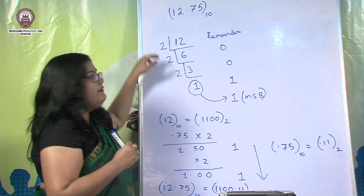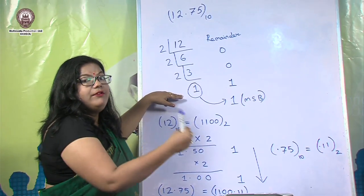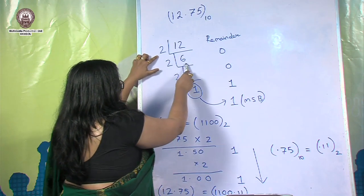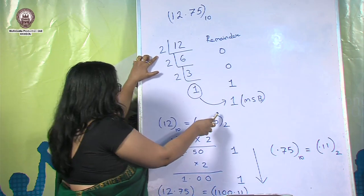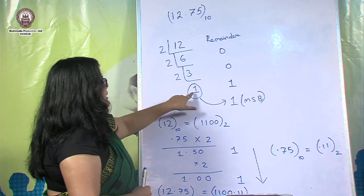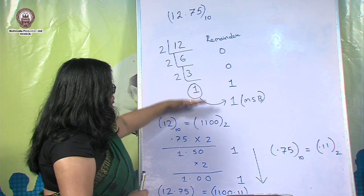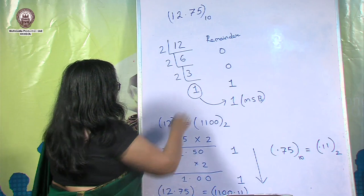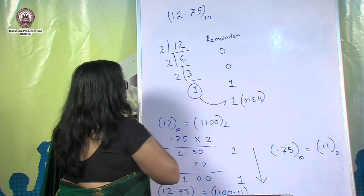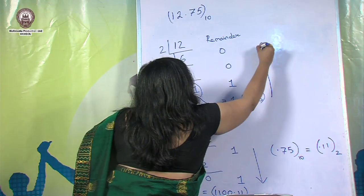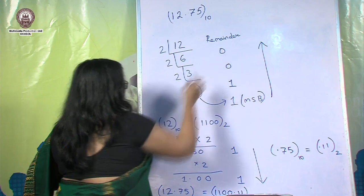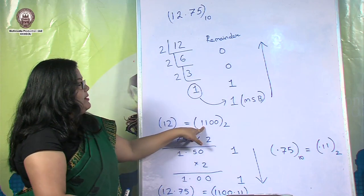Dividing 12 by 2 gives quotient 6 with remainder 0. Dividing 6 by 2 gives quotient 3 with remainder 0. Dividing 3 by 2 gives quotient 1 with remainder 1. Since 1 cannot be divided further, it is added as the most significant bit. Reading the remainders from bottom to top, 12 in binary is 1100.